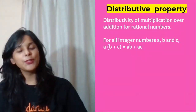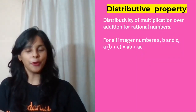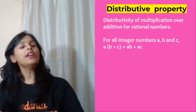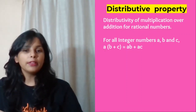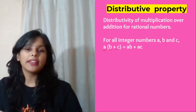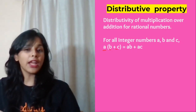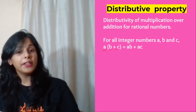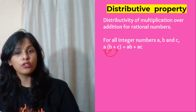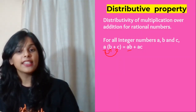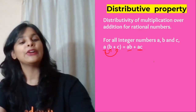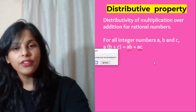Now let's move to distributive property. In distributive property you distribute the number — for example, a times bracket b plus c can be written as a times b plus a times c. So a is multiplied with both b and c separately. That is the distributive property.